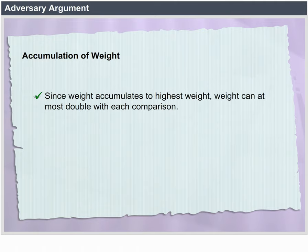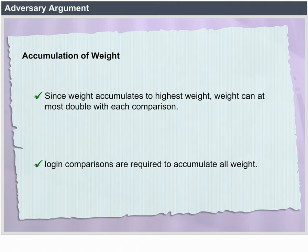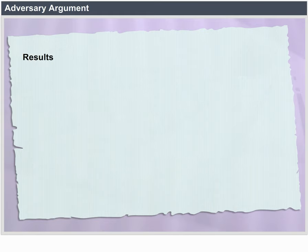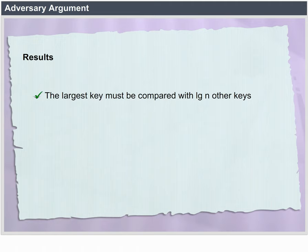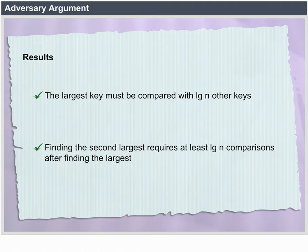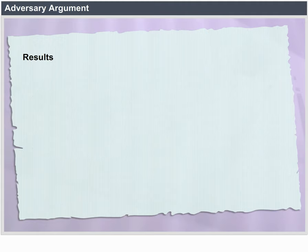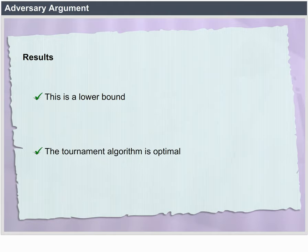Accumulation of weight: solving the problem requires all weights to be accumulated with one key, and all other keys must have weight 0. Since weight accumulates to the highest weight, weight can at most double with each comparison. Thus log N comparisons are required to accumulate all weight. Results: the largest key must be compared with log N other keys, and finding the second largest requires at least log N additional comparisons. The tournament algorithm is optimal.